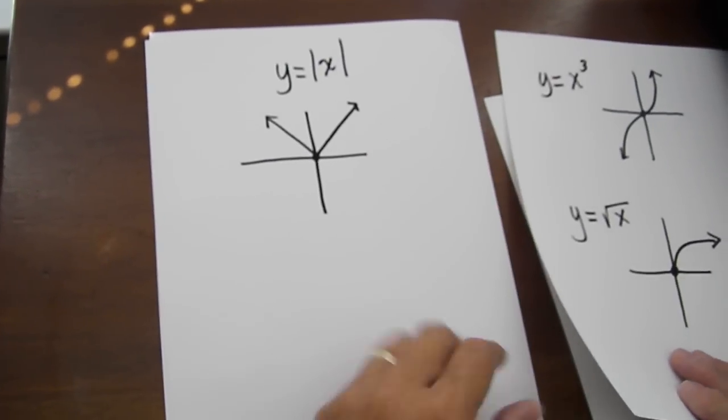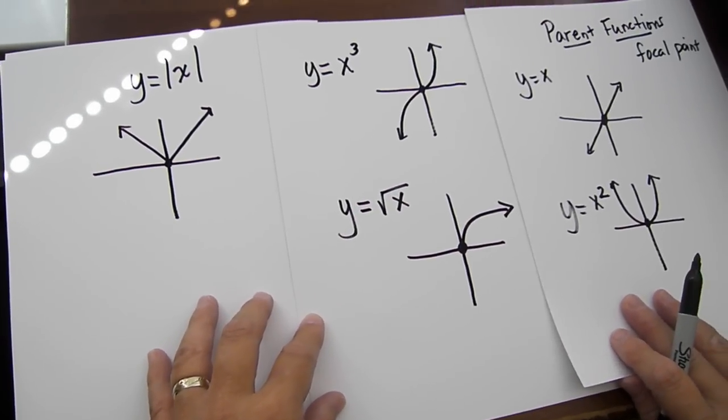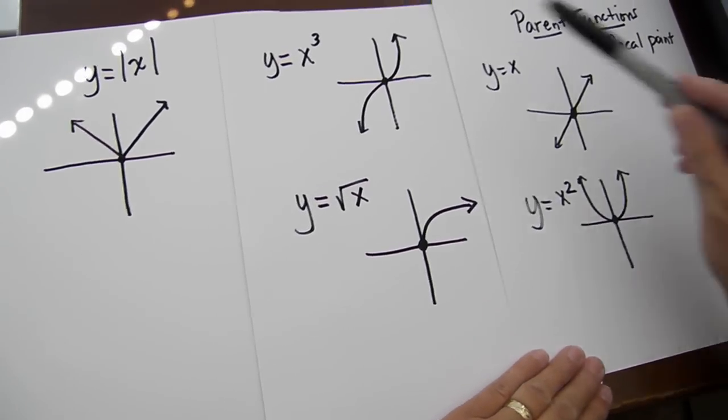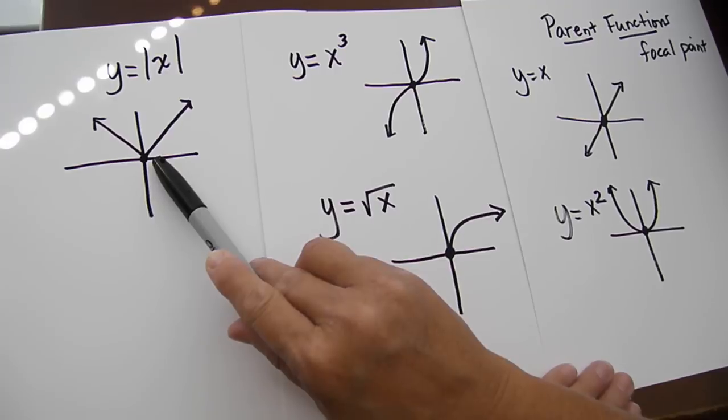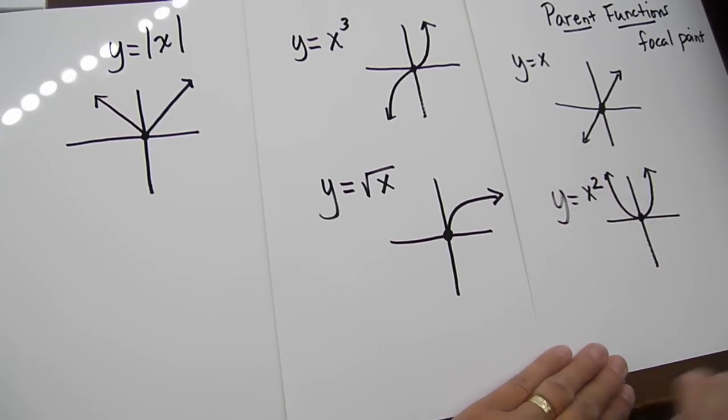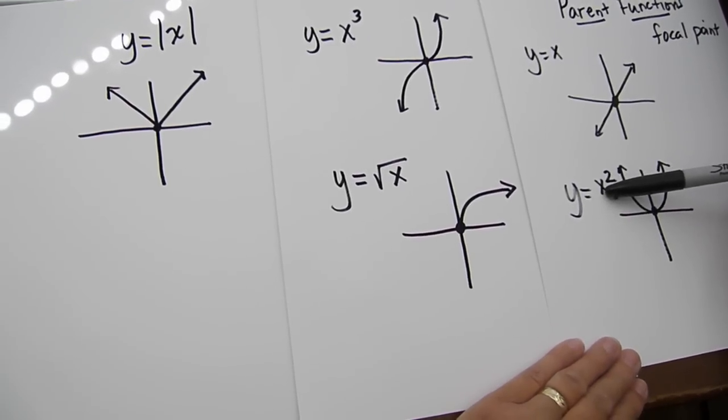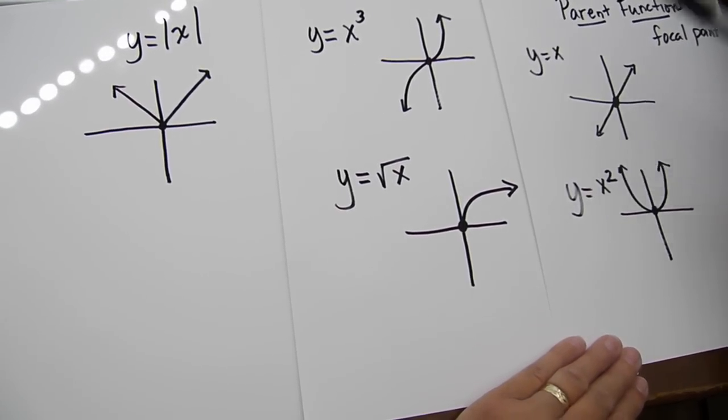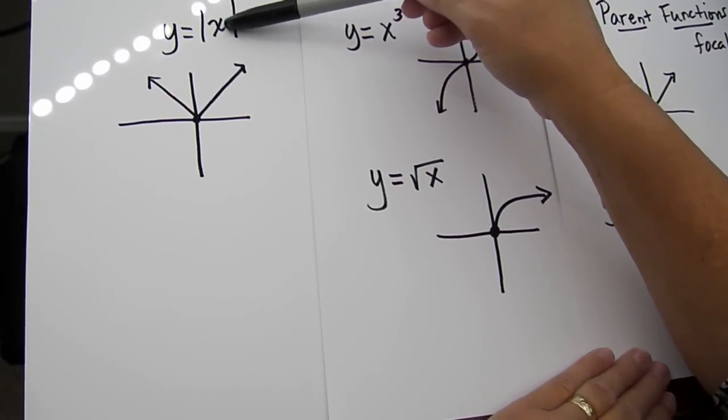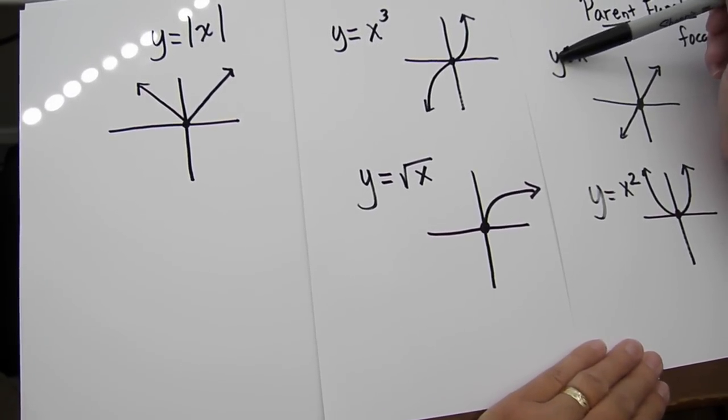The domain and range is also very important to functions. With our domain and range, this graph, and this graph, and this graph, all four have a domain of all real numbers. That means there's no restriction on X. I can place any number into X and square it. I can place any number into X and cube it. I can place any number into X and take its absolute value. And I can take any number into X and set it equal to itself.